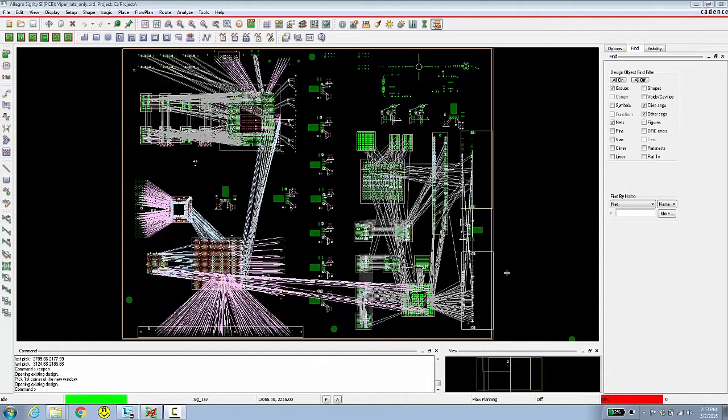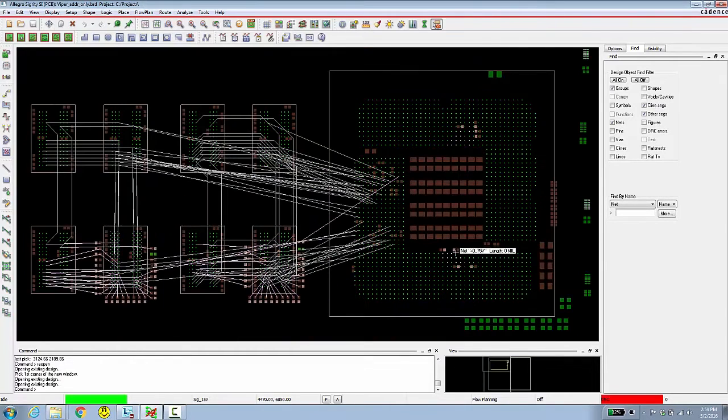Here's the design we'll be looking at today, which is currently in an unrouted state. The difference in rat's nest appearance is Allegro's ability to color rats based on layer transitions, or whether the pins of a particular connection are all located on the same layer, like top for example. Everything might look like it's not too complicated at the moment, but let's open a view where we're just looking at the address bus for the memory interface at the top. It's a little bit messy and certainly not going to work for our desired flyby topology.